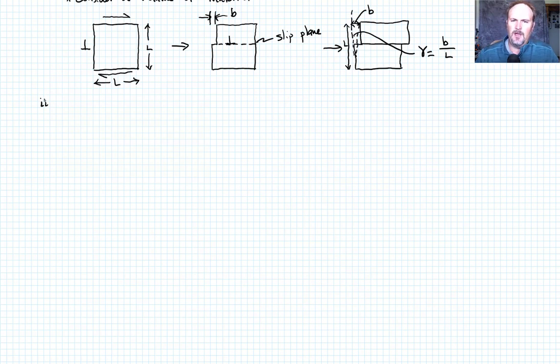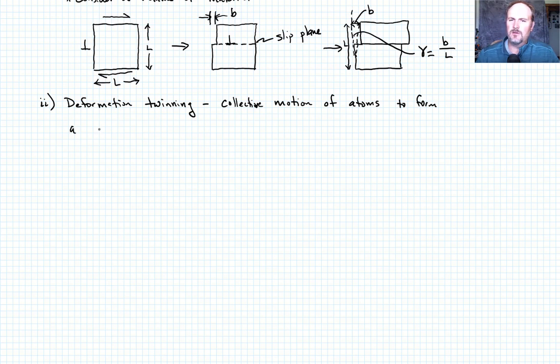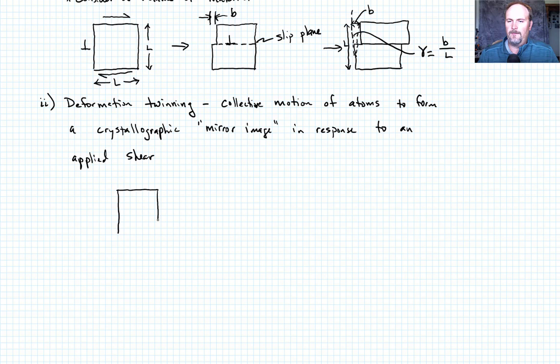A second way that a metal can deform permanently is via what's called deformation twinning. And what deformation twinning is, it's the collective motion of atoms to form some crystallographic mirror image in response to an applied shear. So if we were to draw a picture, let's take our block just like we drew above, or sort of like we drew above, and we put the same shear on it. Under deformation twinning, we might end up with something that looks like this, where this line here would be called the twin boundary, and this top region would be called the twinned region.